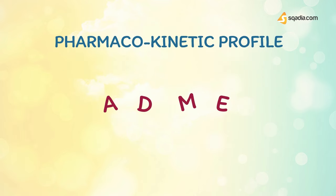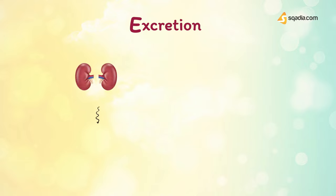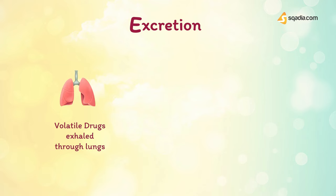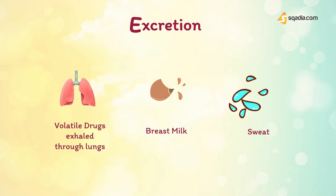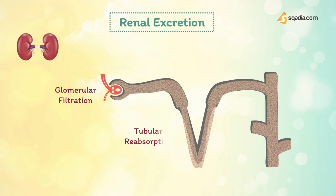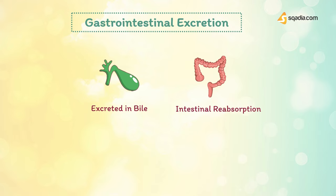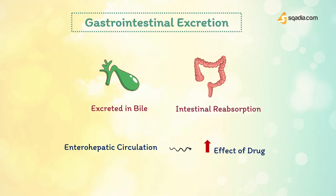Finally, drugs are excreted from the body in a variety of different ways. Excretion predominantly occurs via the kidneys into urine or by the gastrointestinal tract into bile and feces. Volatile drugs are predominantly exhaled by the lungs into the air. To a lesser extent, drugs may leave the body through breast milk and sweat. In renal excretion, glomerular filtration, tubular reabsorption, and tubular secretion all determine the extent to which a drug will be excreted by the kidneys. In gastrointestinal excretion, some drug conjugates are excreted into the bile and subsequently released into the intestines where they are hydrolyzed back to the parent compound and reabsorbed — this enterohepatic circulation prolongs the effect of the drug.